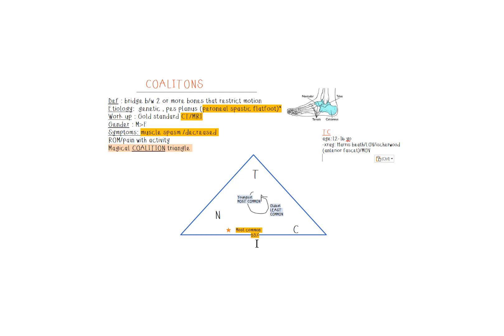The next biggest component you want to watch out for is the x-rays. They love to test on which x-ray you should get to see this coalition. For this one it's the Harris view, the lateral oblique view, the Isherwood specifically looking at the anterior facet, and the medial oblique view.